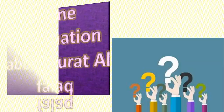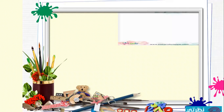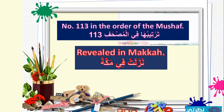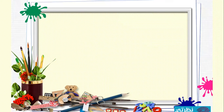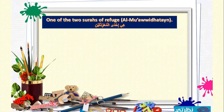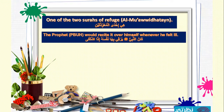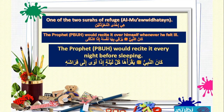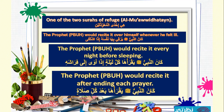Let's start with some information about Surah Al-Falaq. In the order of the Mus'haf, it is Surah number 113, revealed in Mecca. It has five ayahs. It is one of the two Surahs of Refuge, Al-Ma'uzatayn. The Prophet Muhammad, sallallahu alayhi wa sallam, would recite it over himself whenever he felt ill, every night before sleeping, and after ending each prayer.